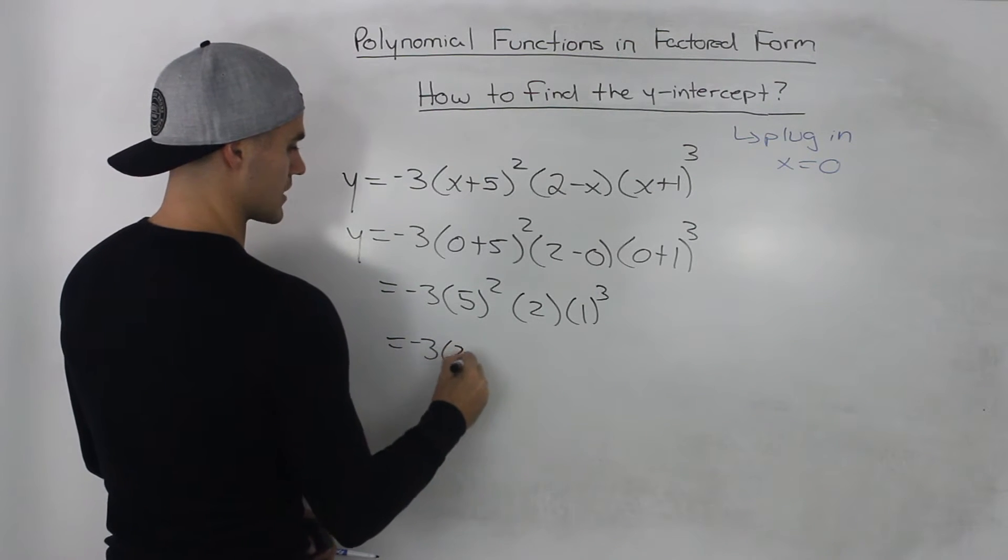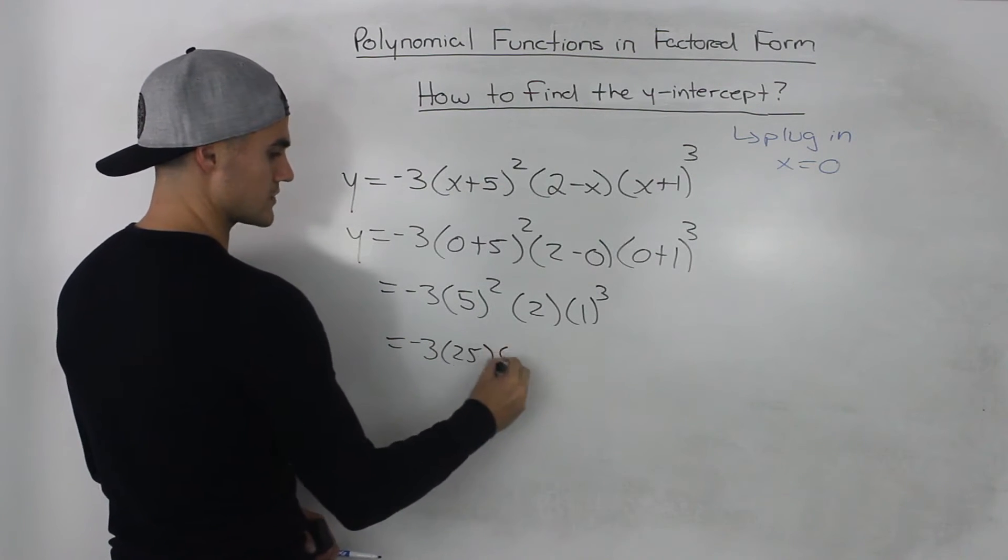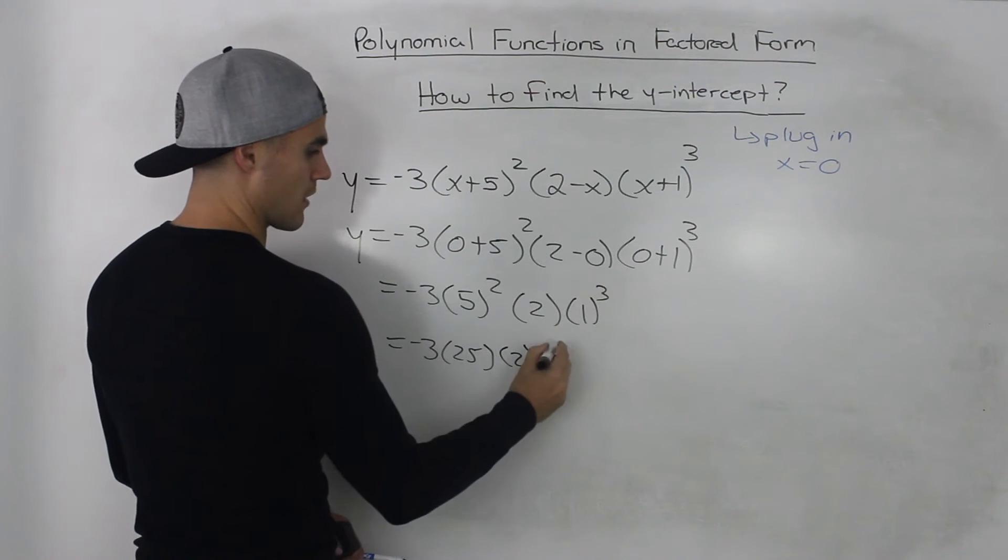So we'd have negative 3 times 25. 5 squared is 25, times 2, 1 to the power of 3 is just 1.